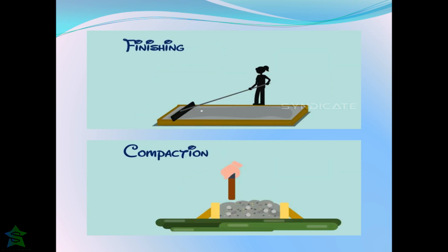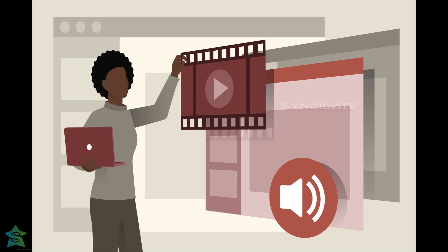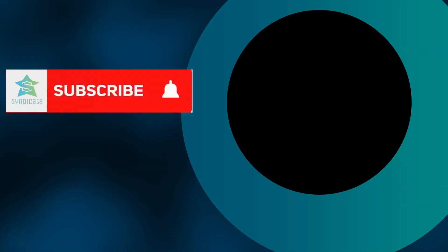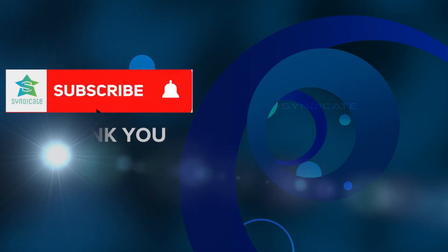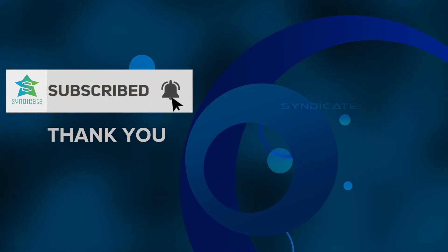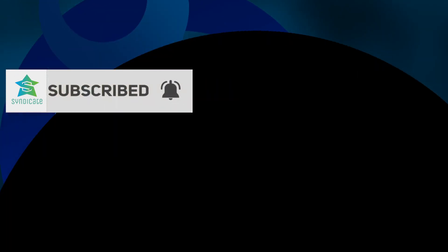Concrete must be compacted with vibrators only for a required period of time to prevent segregation. In the next video we will be exploring about the third type of segregation known as bleeding in detail. Until then, stay connected. Thank you for watching.